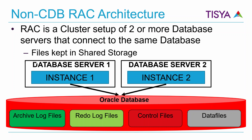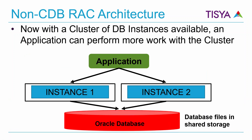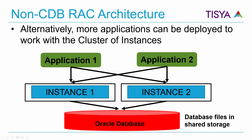Once you have a collection of instances accessing the same storage, you can have more work done through them. You can have specific applications connect to a particular service, which can be exposed over a particular instance. Services are discussed in another playlist I have provided about Grid Infrastructure and RAC concepts overview — look into that for more details about terminology with respect to RAC.